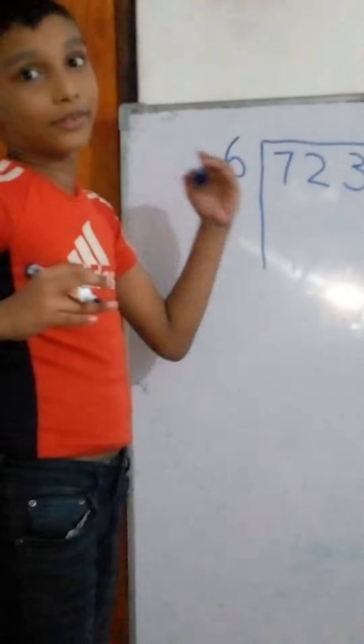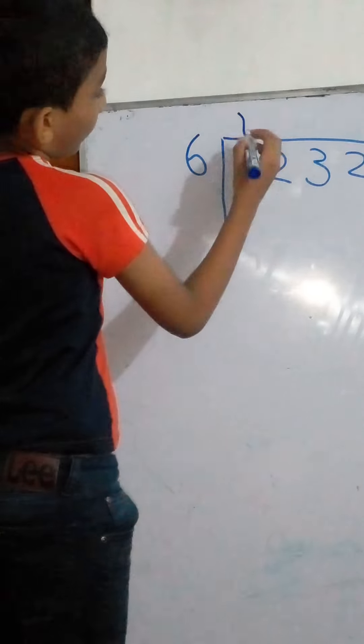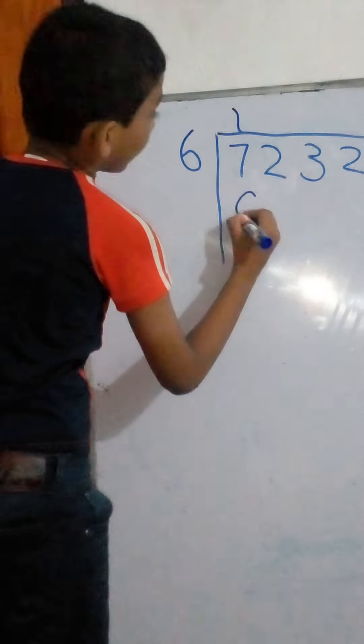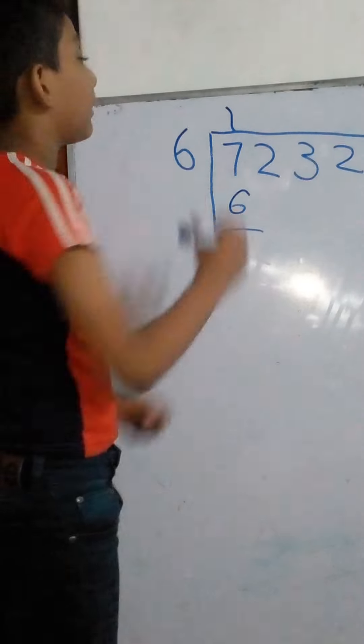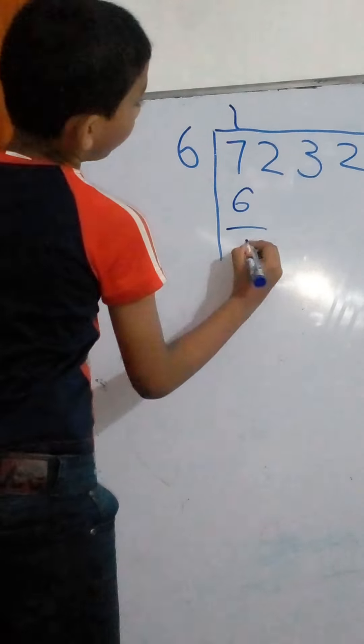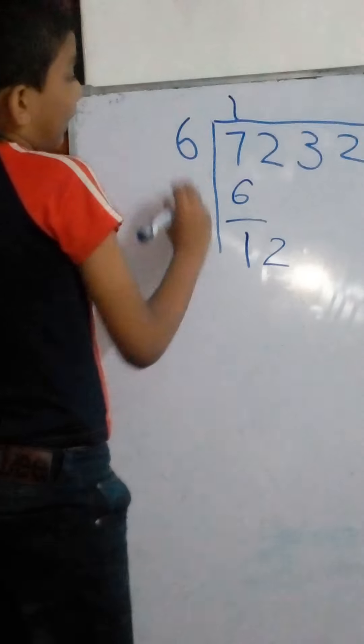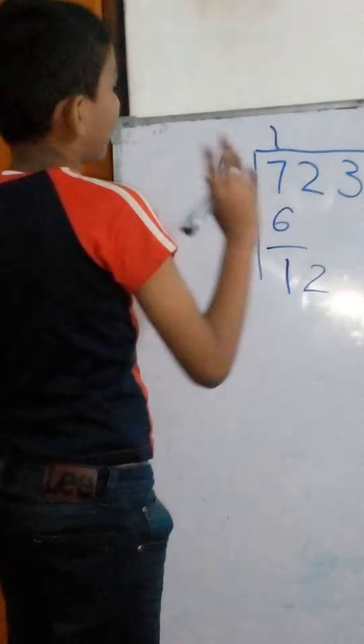Six divided seven is one. Six times one is six. Seven minus one is one. And these two come here. And twelve divided six.